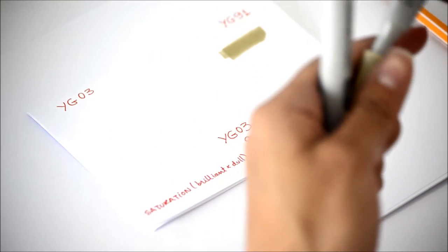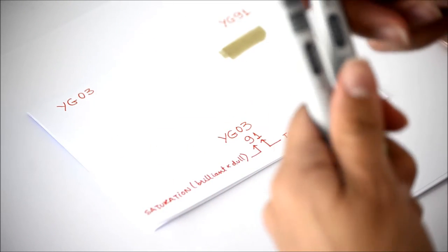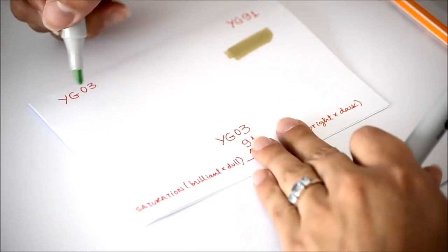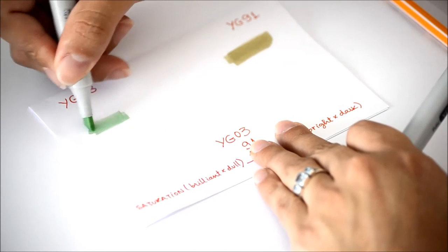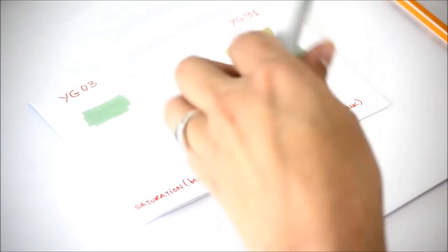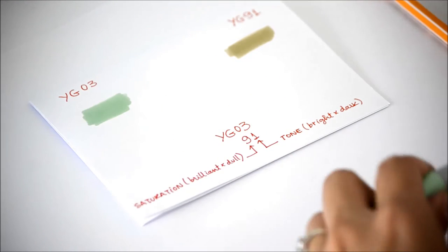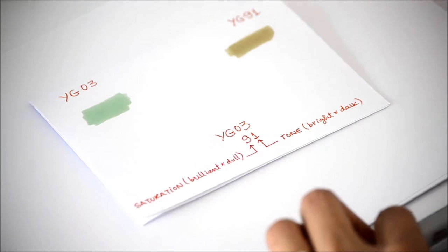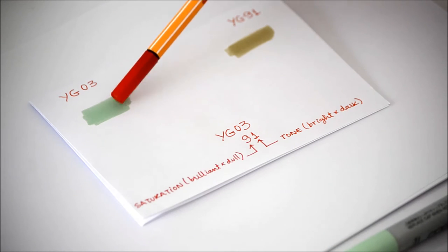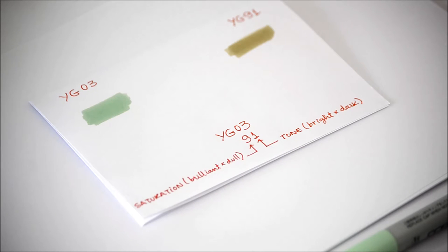And this one is YG41. So here we can see perfectly the difference. This color is much more saturated than this one, and this one is a bit darker than this one if we compare the values of brightness and darkness.